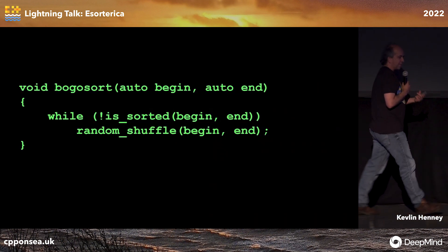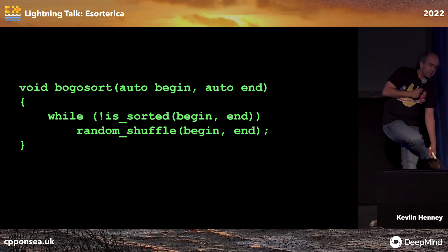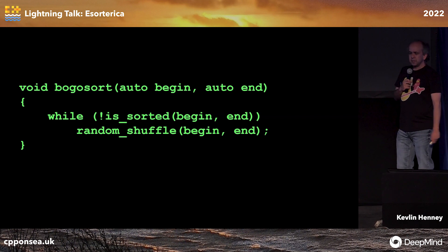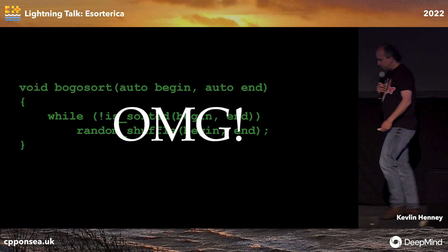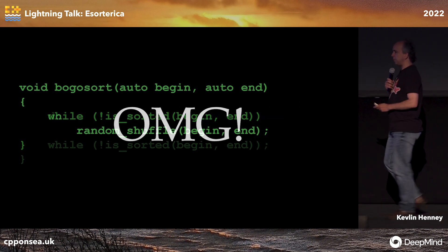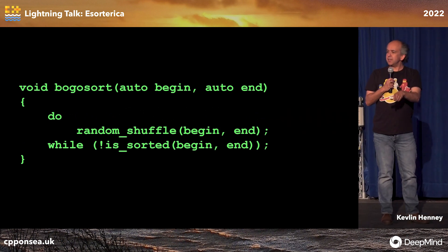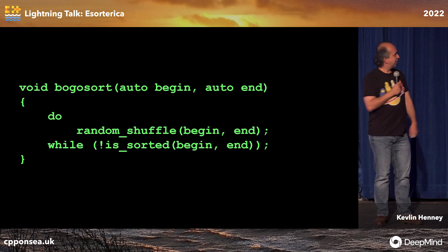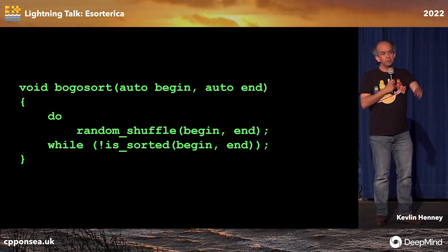And then there's the classic, which people often implement in various different ways. You basically just shuffle it randomly until it's sorted. And this has got OMG complexity. The thing is, most people implement this one incorrectly, because what they do is they check if it's sorted first. But what if it's already sorted? No — this is the one use I have found that is reasonable for a do-while loop.